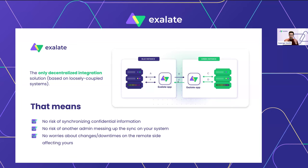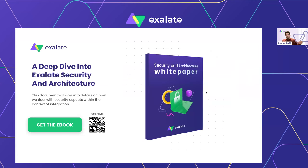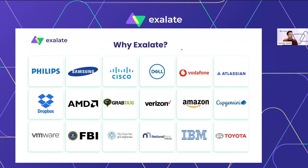We'll pop a link in the chat to a full security and architecture white paper so you can find out more. Exalate is being used on some of Atlassian's biggest sites — the highest user tiers — all the way through to smaller startup tech companies using Jira Cloud. It's used across a whole range of systems and use cases, with everyone having set up their ITSM serving the business in their own specific way.